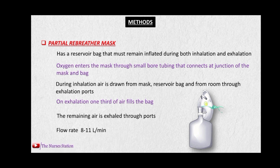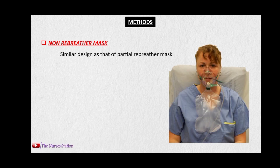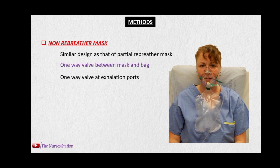The flow rate in the partial rebreather mask is usually 8 to 11 liters per minute. The next method is the non-rebreather mask. It is similar in design to the partial rebreather mask, except it has a one-way valve between the reservoir bag and the body of the mask. This valve allows air to pass from the bag into the mask but blocks air from passing from the mask into the bag. One-way valves are also placed at the exhalation ports, allowing exhaled air to exit while preventing room air from entering during inhalation. The flow rate is 10 to 15 liters per minute.